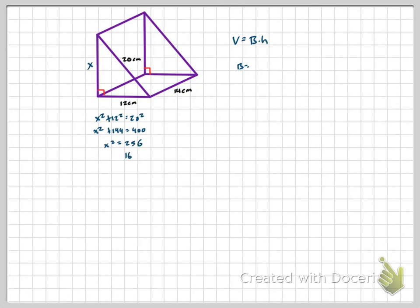So that missing distance is 16. So the area of my base is 1 half times 12 times 16. 1 half times 12 is 6. 6 times 16 is 96. So our base area is 96. We have our height, which is 14. So our volume is area of the base times the height. So 96 times 14 is 1,344 centimeters cubed.